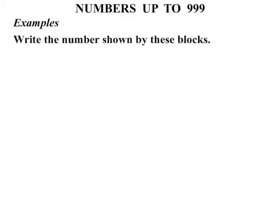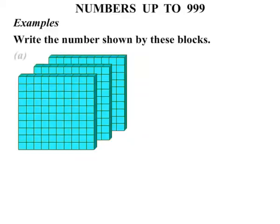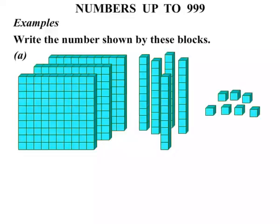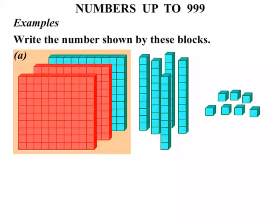Examples. Write the number shown by these blocks. Part A, we have a number of flats, a number of longs, and then some shorts. Now let's see what we have got. Remember each flat is worth 100. So we are going to count in hundreds: 100, 200, 300. So 300 so far.